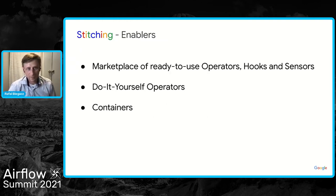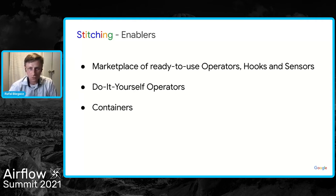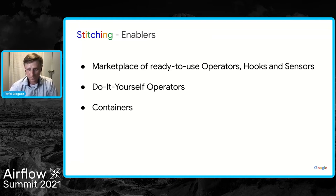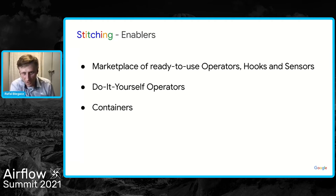What are the enablers of this stitching? We have a very rich marketplace of ready-to-use operators, hooks, and sensors — you get them out of the box for free. There are also some commercially available operators, hooks, and sensors from other companies. But if nothing meets your expectations, you can build your own operators.